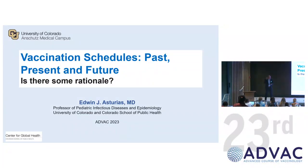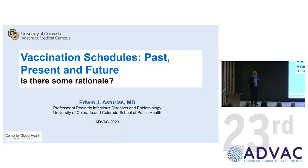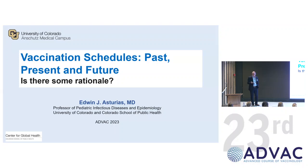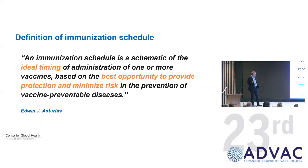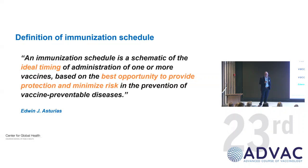Thank you, Kamel. So, great to have you back. Janet and Christiane have made my life very easy in terms of looking at the past, the present, and the future immunization schedules. Let me start by thinking about what an immunization schedule is. The ideal timing on when you're going to give vaccines to anyone — children, adults — to give them the best opportunity to get protected, but also to minimize risk. Those are three important components when you think about immunization schedules.